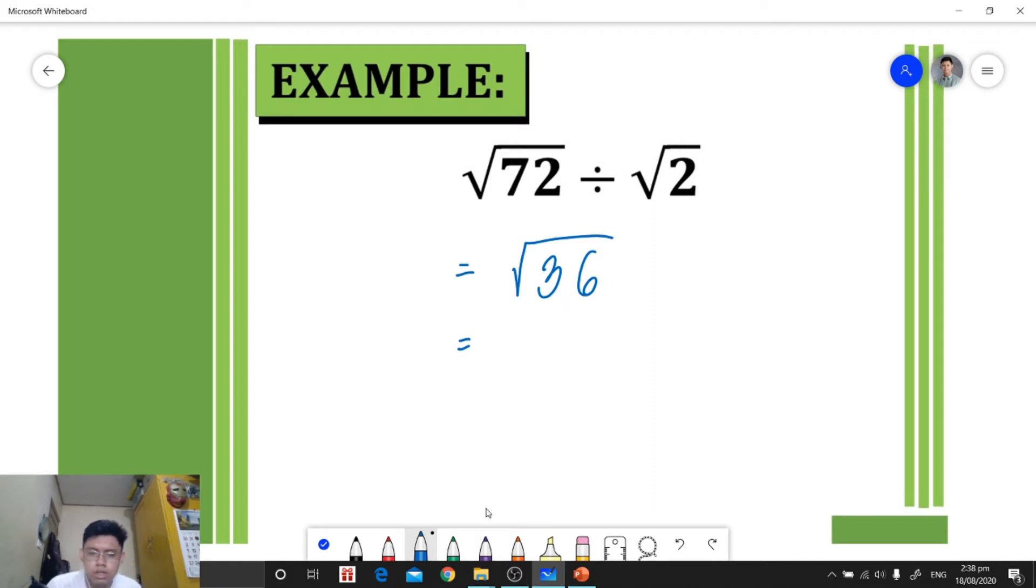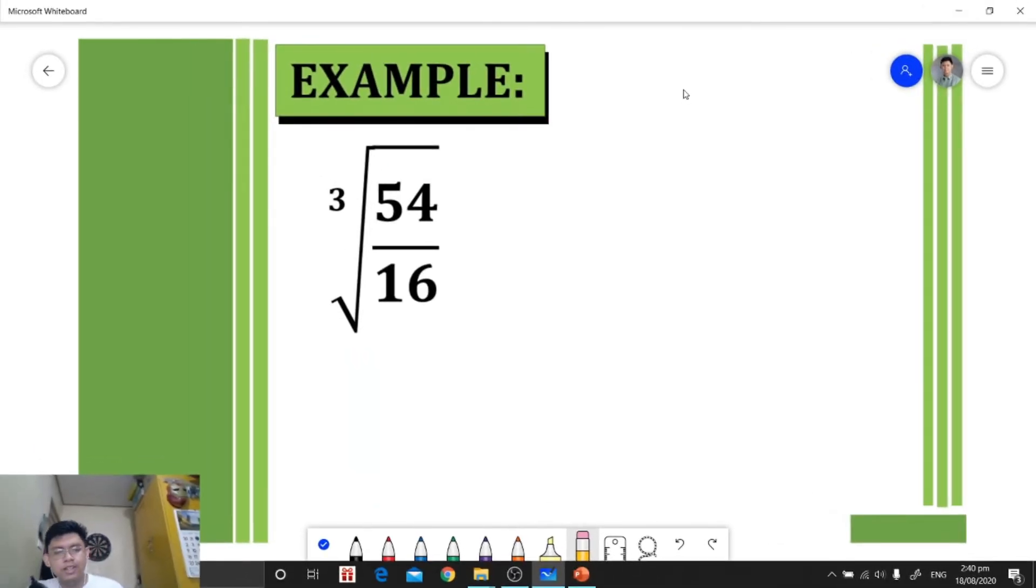Let's have another example. We have the cube root of 54 over 16. If we cannot divide them, let's simplify them. They have a greatest common factor which is 2, so let's divide both numerator and denominator by 2. 54 divided by 2 equals 27, and 16 divided by 2 equals 8.